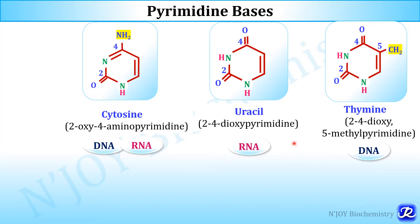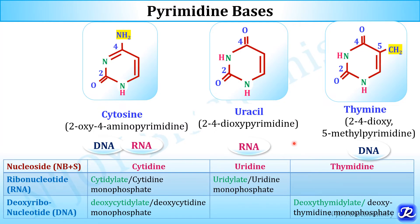When a pyrimidine base is linked to a ribosugar or pentosugar, it is called a nucleoside. If a phosphate group is also attached, it is called a nucleotide — a ribonucleotide if the sugar is ribosugar, or a deoxyribonucleotide if the sugar is deoxyribosugar.